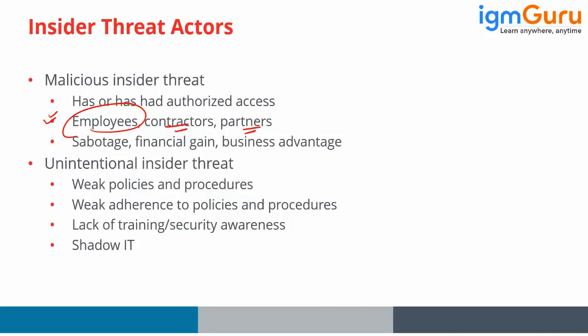The threat actor could also be unintentional — caused by weak policies configured in the system, weak adherence to policy, lack of training, or shadow IT. Shadow IT is where decisions over the purchase of IT resources are made by management who may not be aware of the technological benefits of certain tools. For financial reasons, they might purchase a tool that is not very good for the organization.